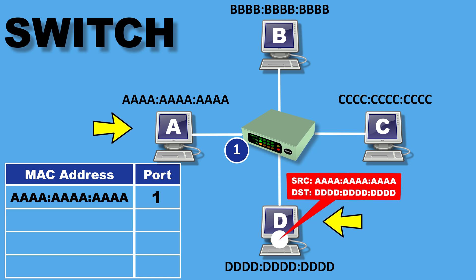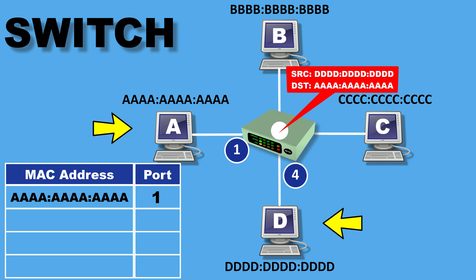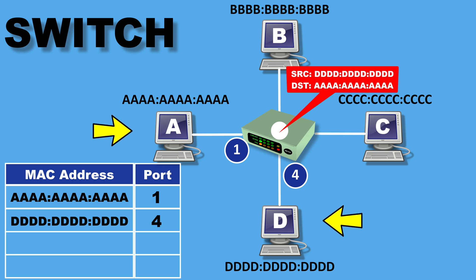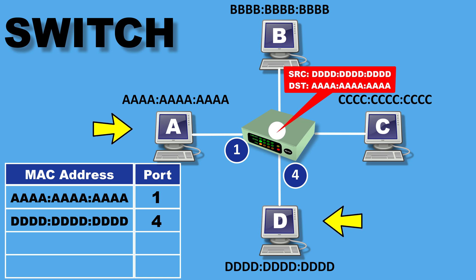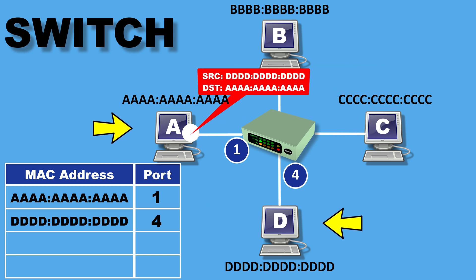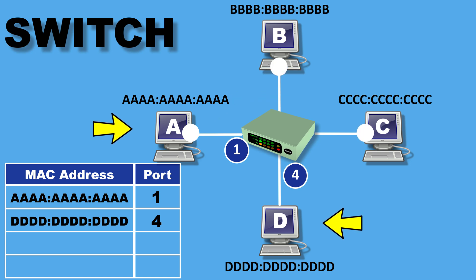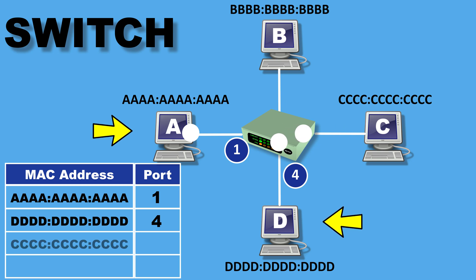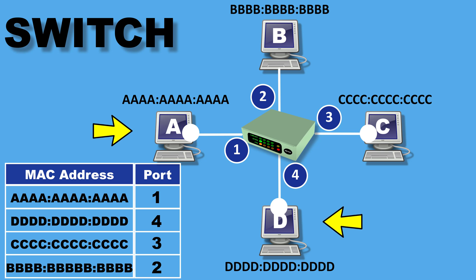Now watch carefully what happens. When the switch receives the reply message on port 4 from PC D, it examines the source MAC address and finds it's not in the table, so it adds PC D's MAC address with associated port 4. Then the switch checks the destination MAC address and this time finds PC A's MAC address and its associated port in the table. So the switch sends the data to PC A only, without flooding all ports. The same way, as other devices communicate, the switch records their MAC addresses and establishes one-to-one communication.